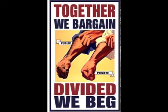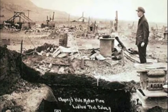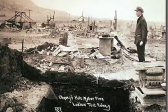Violent clashes over labor continued into the 20th century. In 1914, the Rockefellers hired private detectives and the Colorado National Guard to end a bitter coal miner strike at Ludlow, Colorado. When evicting the workers failed to end the strike, militiamen attacked the strikers, killing 66 men, women, and children. Can you imagine something like that happening today? The working men and women that came before us struggled to secure so many of the basic rights that we take for granted.